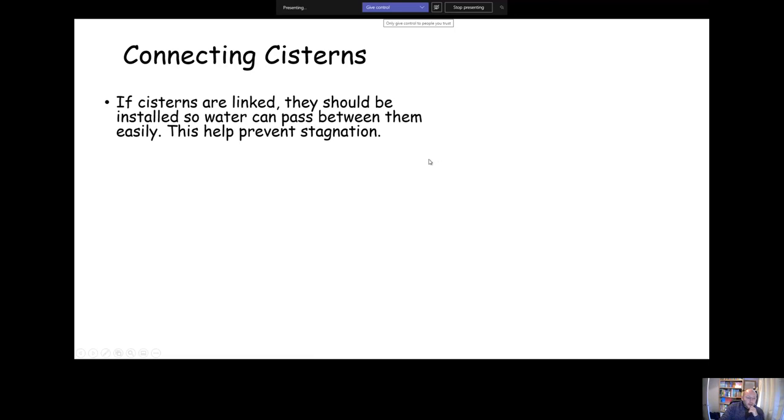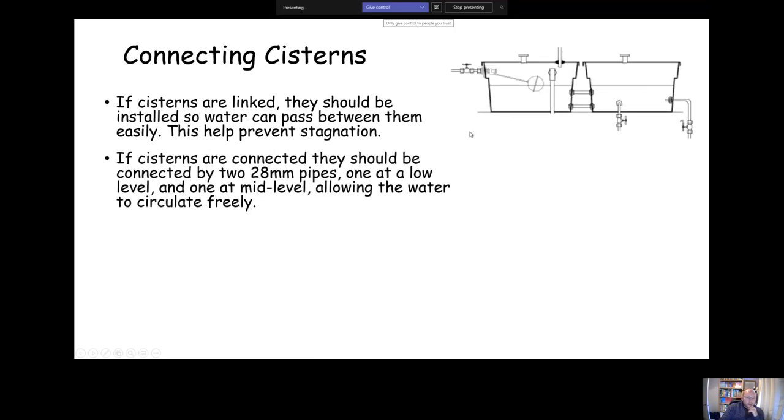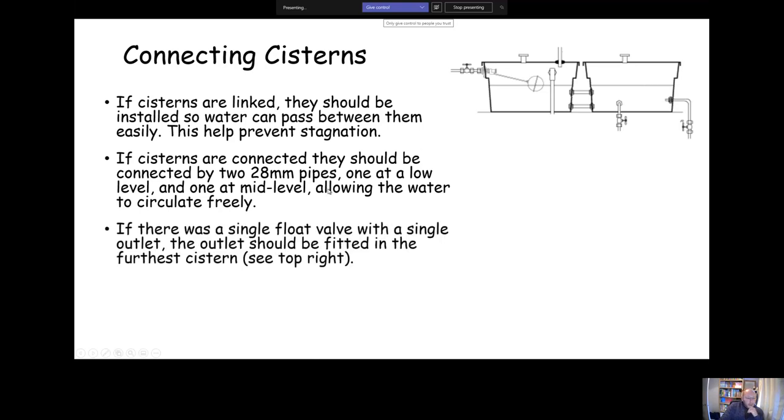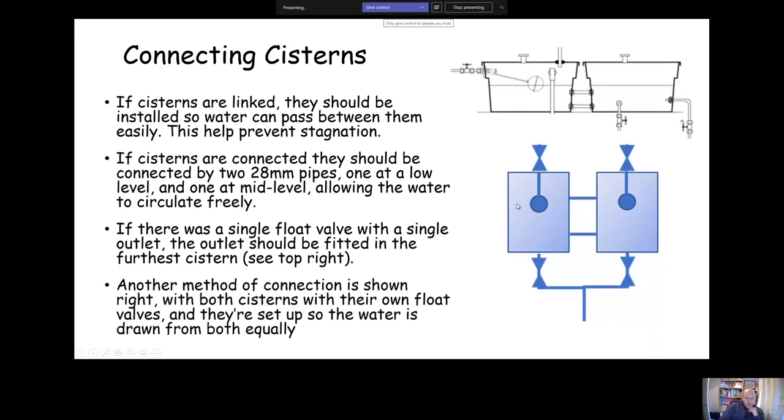So connecting systems: if systems are linked, they should be connected with two pipes, one at low level and one at sort of medium level. If you only have one inlet, you should make sure that the outlets are in the furthest system from the inlet. There's another method of connection here, you can see you've got two inlets and two outlets there. You want to try and make sure that you prevent stagnation, you get water flowing equally from both of them. If you have two float valves or if you have one float valve, you need to make sure that the oldest water gets used up first so it's not going to stagnate.